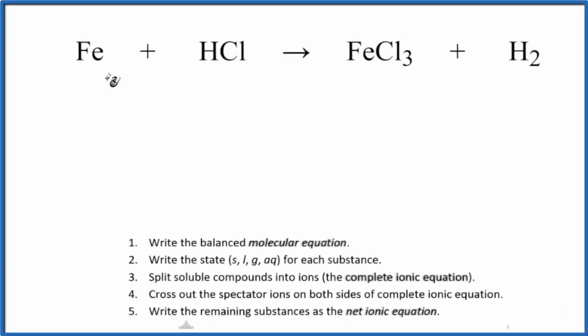In this video, we'll write the net ionic equation for Fe plus HCl. That's iron plus hydrochloric acid. This is a single displacement reaction where the iron displaces the hydrogen.